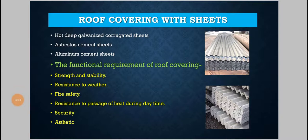Flat roofs are RCC structures that only need to be cast and sealed — the structure itself resists all environmental conditions. In the case of pitched roofs, different types of covering materials are used to cover the roof surface. The most preferable materials for this purpose are asbestos cement sheets and aluminium cement sheets.